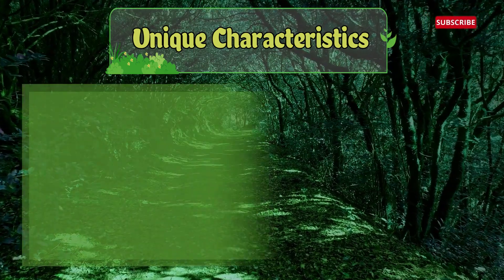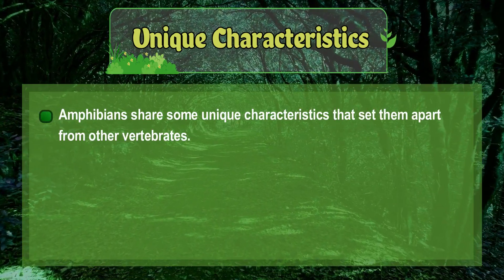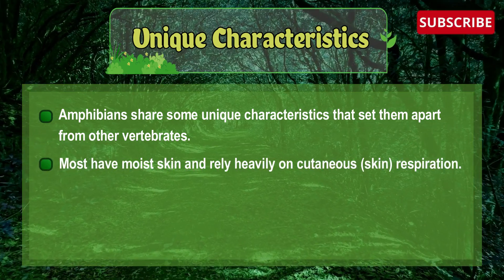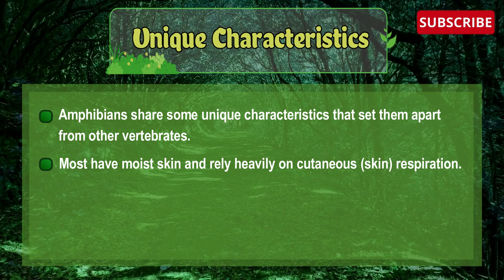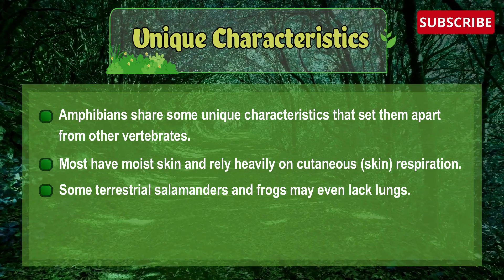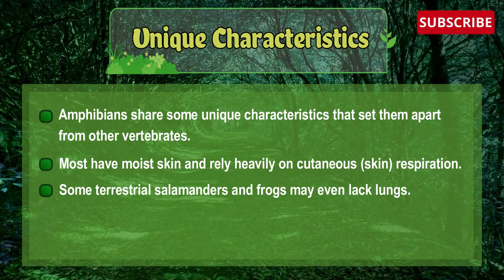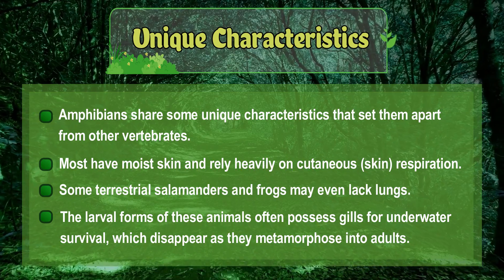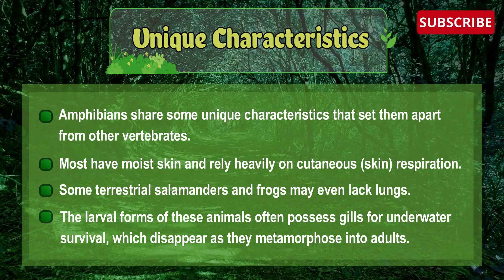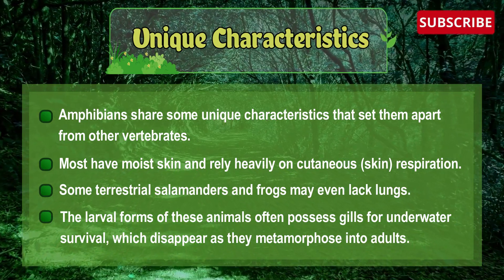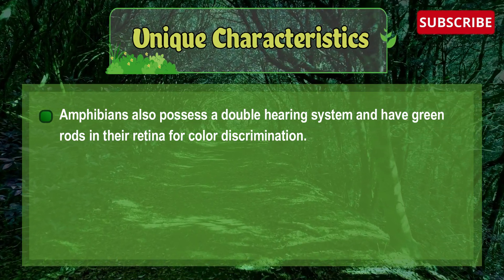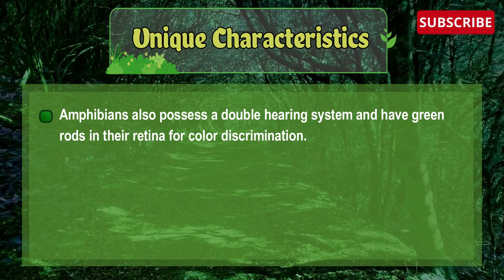Amphibians share some unique characteristics that set them apart from other vertebrates. Most have moist skin and rely heavily on cutaneous skin respiration. Some terrestrial salamanders and frogs may also have mucous glands. The larval forms often possess gills for underwater survival, which disappear as they metamorphose into adults. Amphibians also possess a double hearing system and have green rods in their retina for color discrimination.